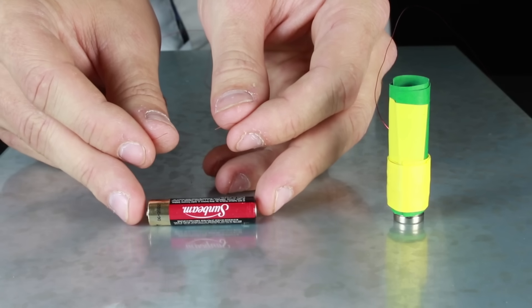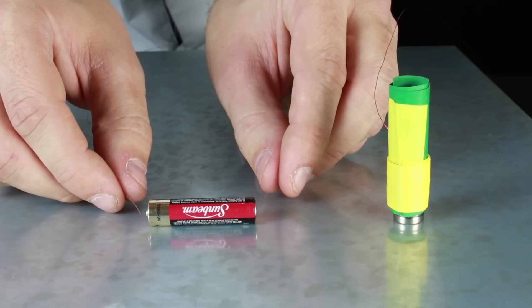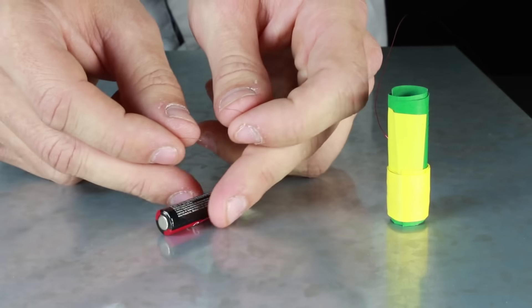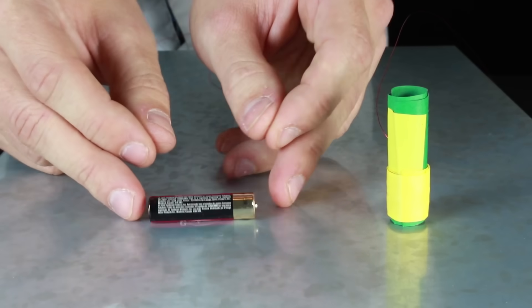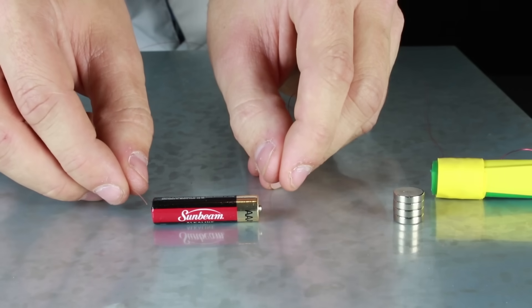What you've created is an electromagnet. When electricity is sent in one direction, the electromagnet will be pulled downward. However, if the electricity is sent in the other direction, the magnetic poles will flip, causing it to be pushed upward.